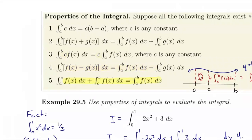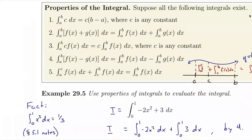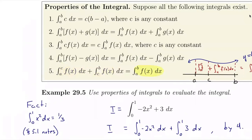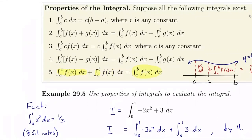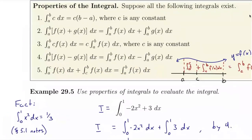We can factor a constant c out of an integral: the integral of c times f of x equals c times the integral of f of x — this also comes from limit laws. Likewise for differences. Additionally, if we integrate from a to c plus from c to b of the same function, that equals the integral from a to b. So we can split an integral at any interior point c between a and b, or conversely combine two adjacent integrals into one.